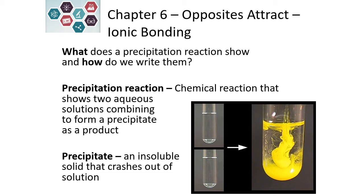When compounds dissolve into solution or water, they produce a homogeneous mixture. When these homogeneous mixtures are combined, they can sometimes form an insoluble precipitate. We call this a precipitation reaction — that precipitate is an insoluble solid that falls to the bottom of the container, sometimes referred to as 'crashing out.'